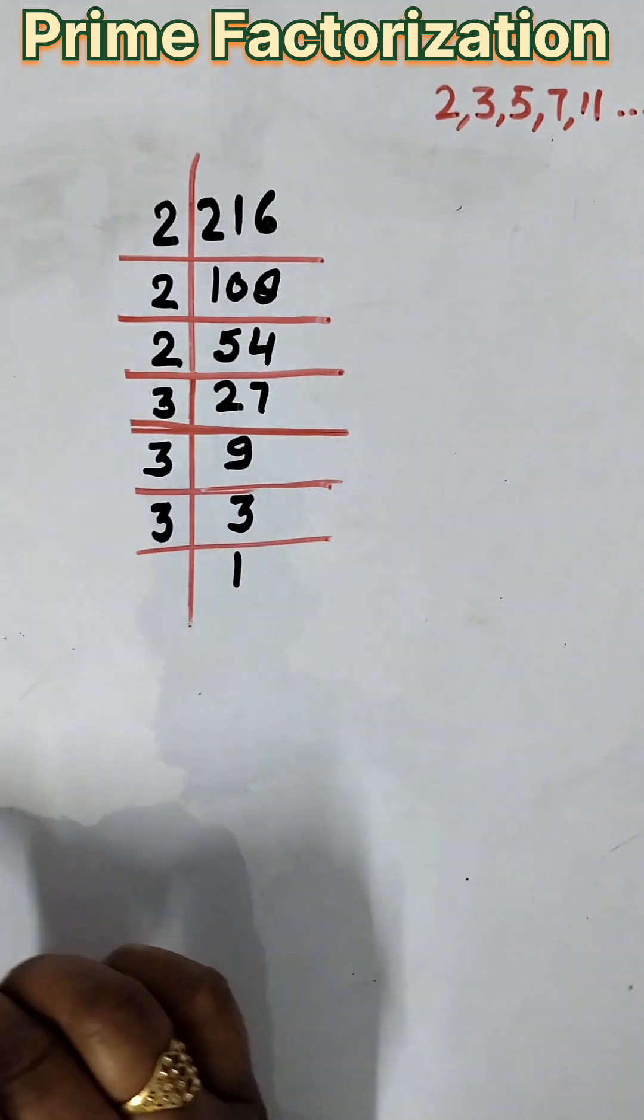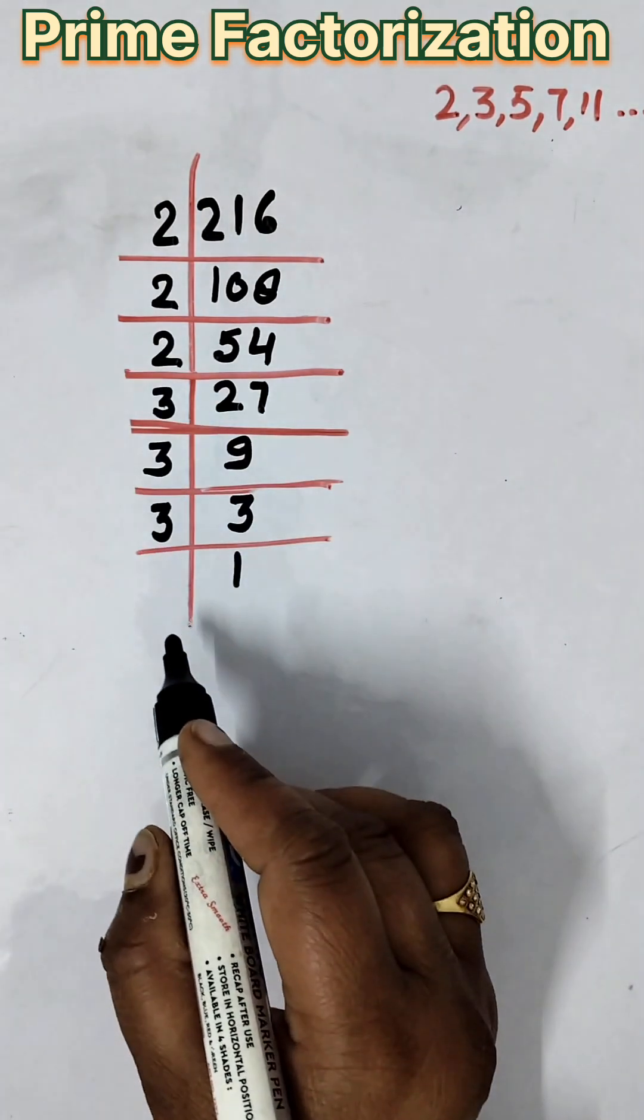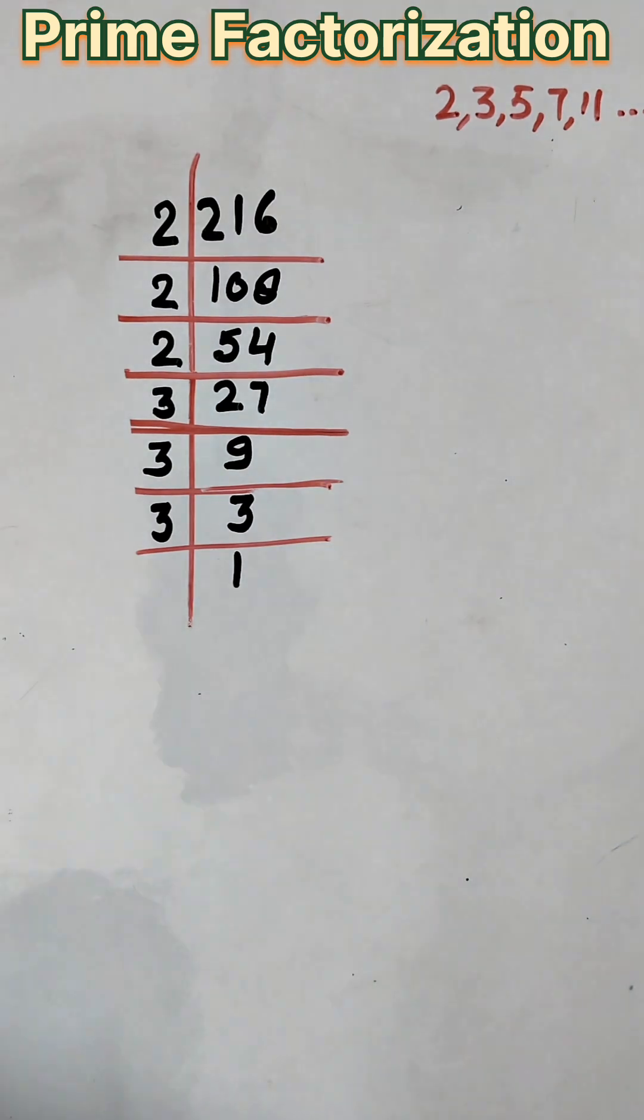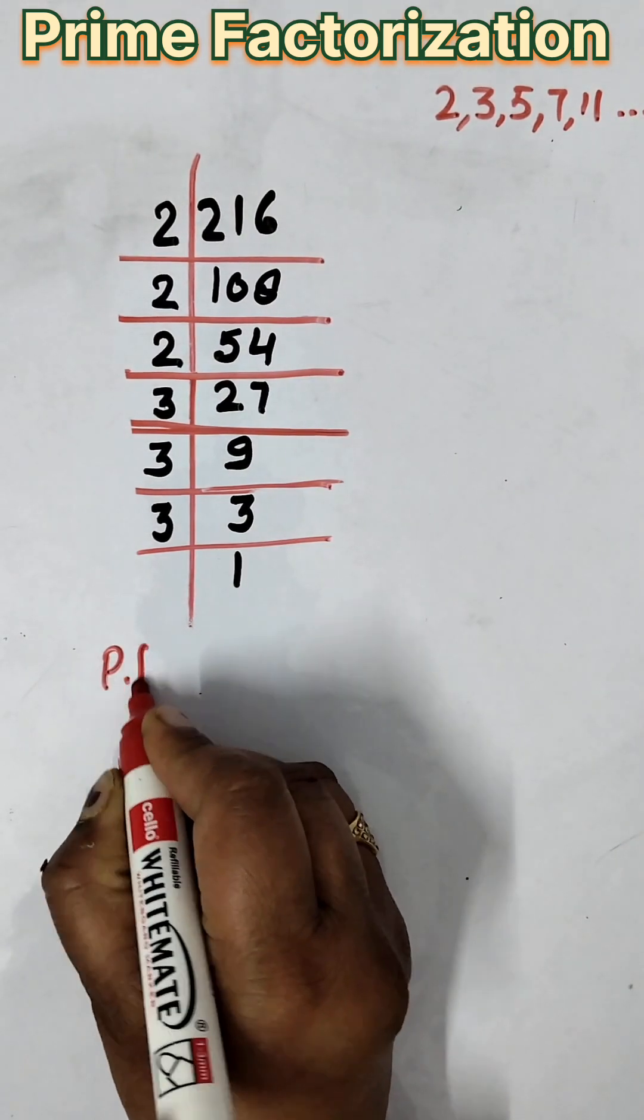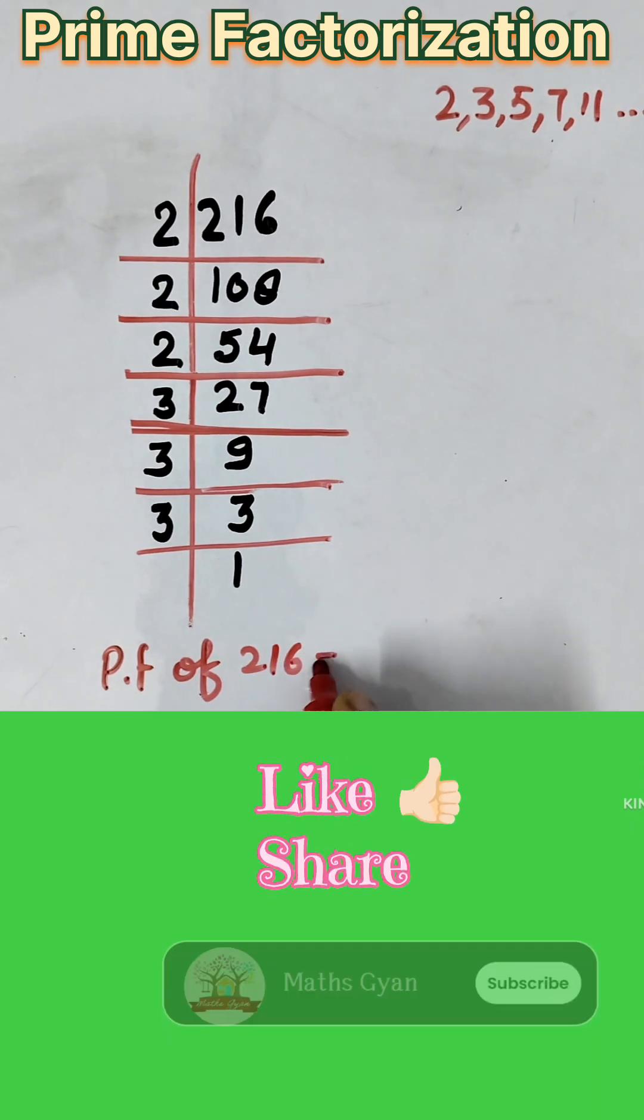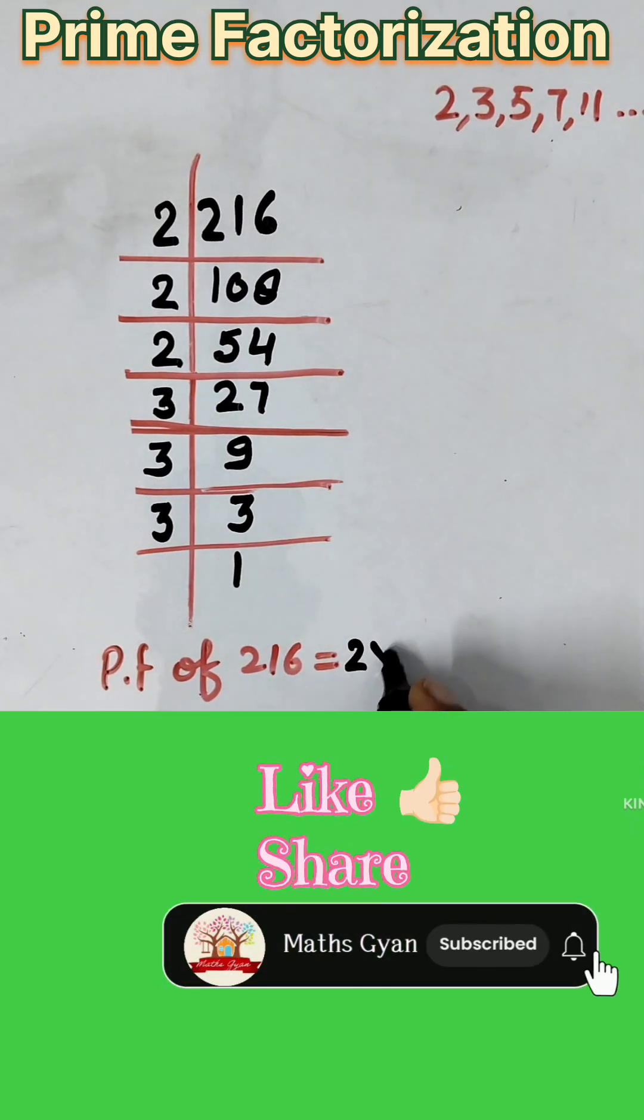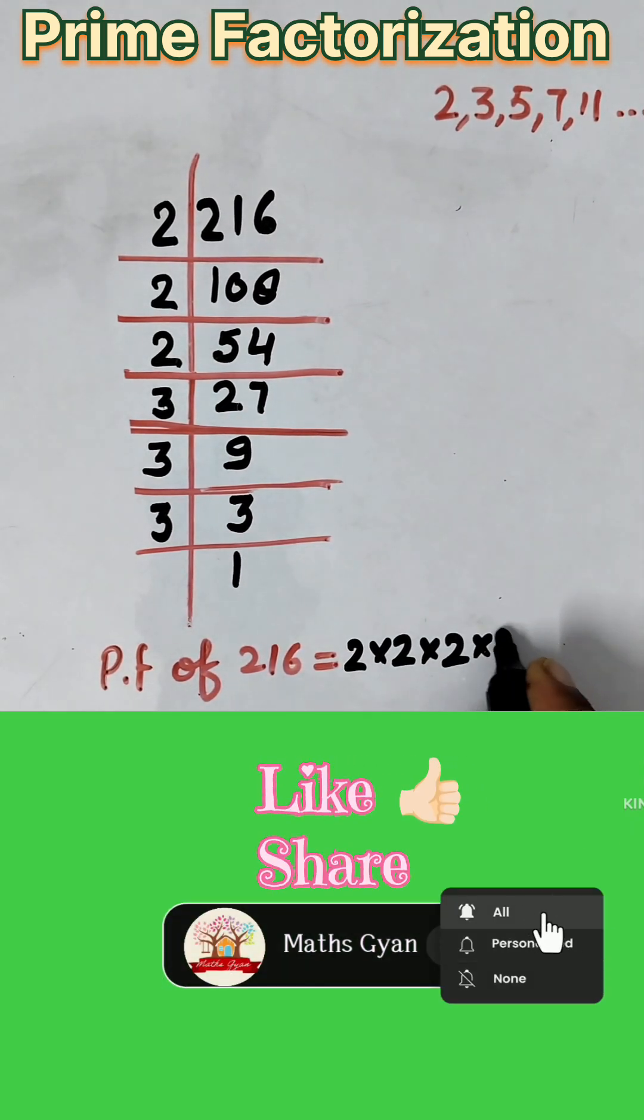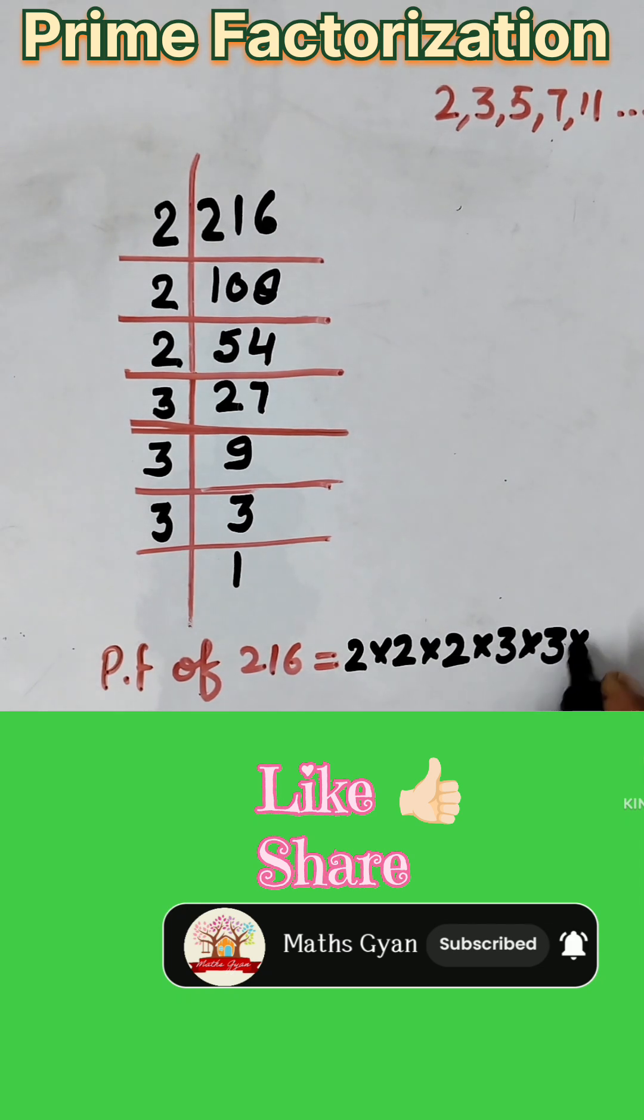We take 3. 3 ones are 3. Now, it is the prime factorization of 216. The prime factorization of 216 is 2 × 2 × 2 × 3 × 3 × 3.